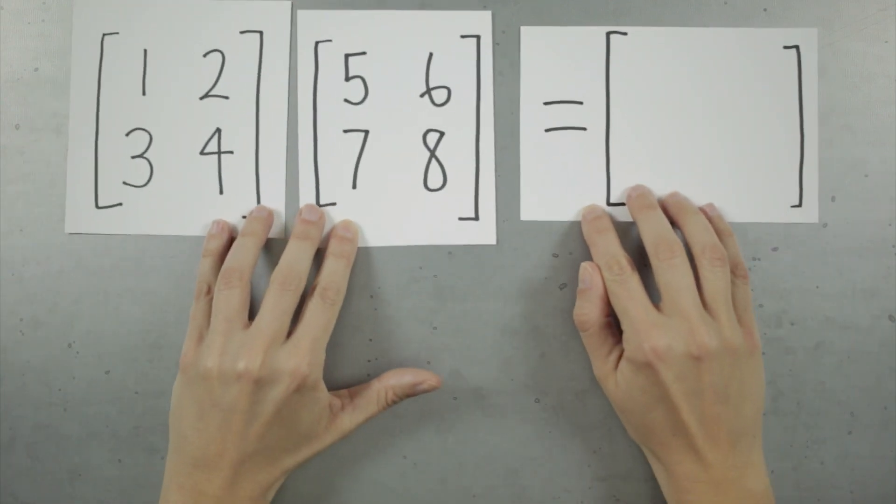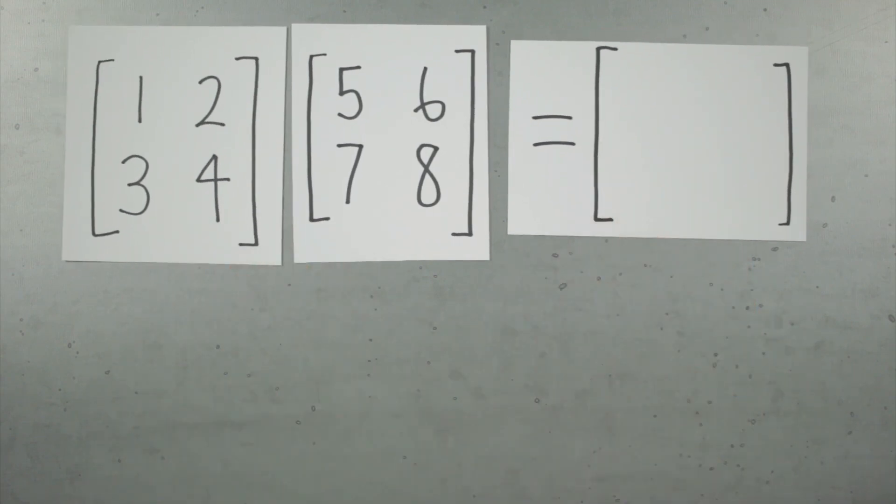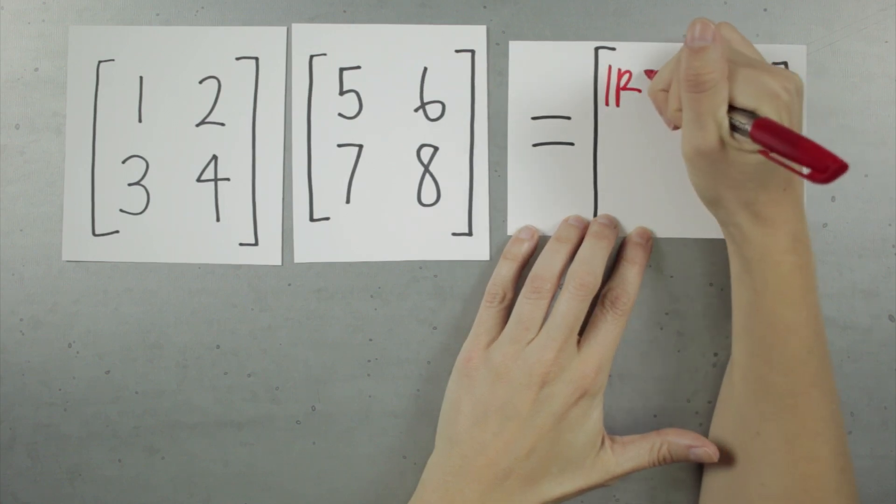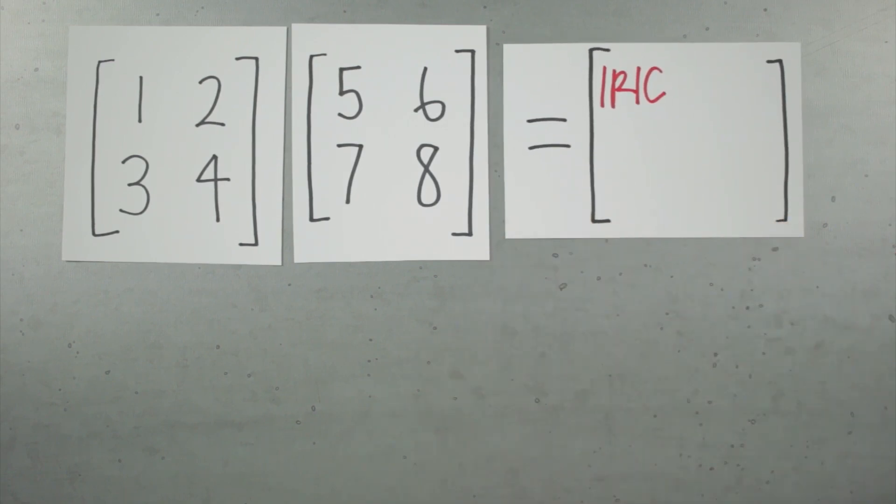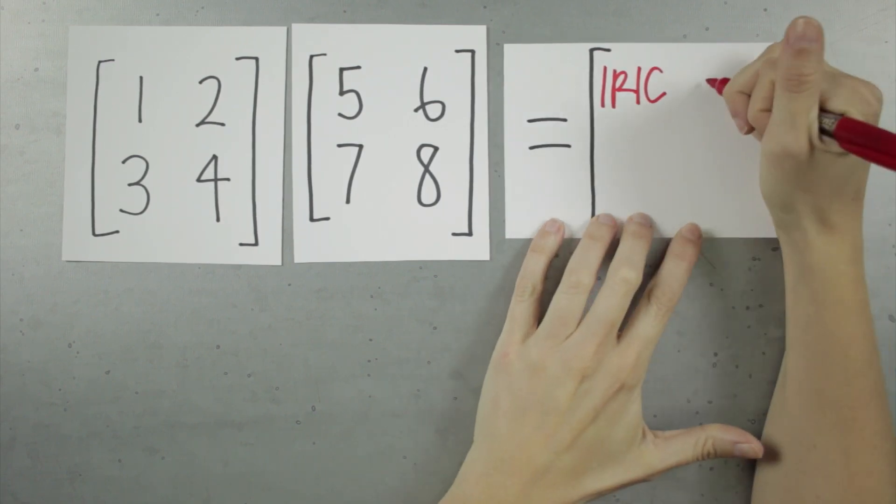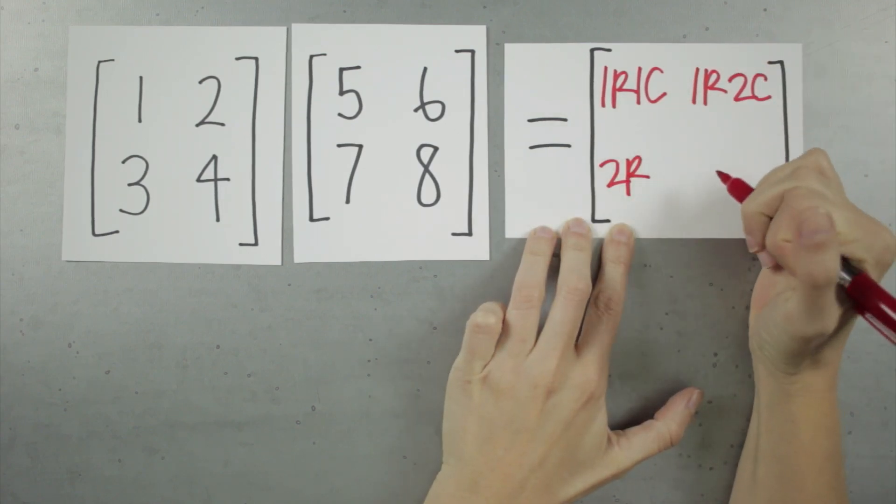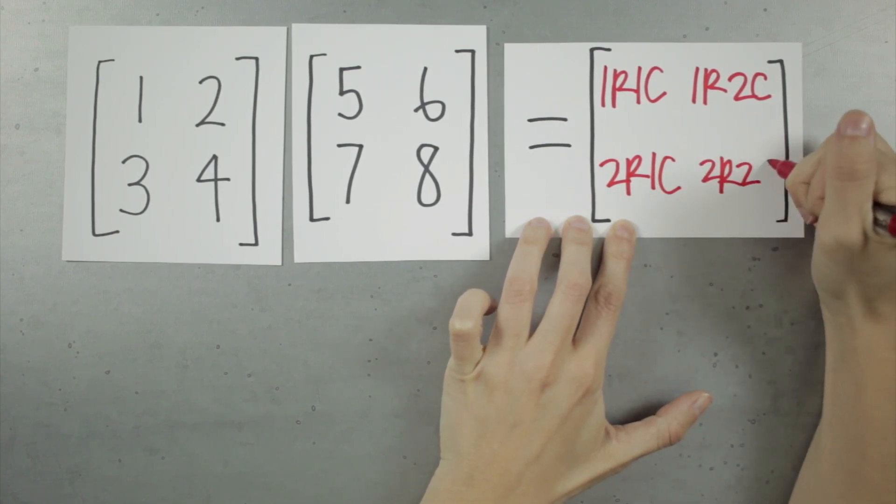Now to remember what to put where, you can say that the first entry in the resulting matrix will be the dot product of the first row from the first matrix, and the first column from the second matrix. So first row, first column. The dot product of the first row and second column goes here. The second row and first column here. And the second row, second column here.